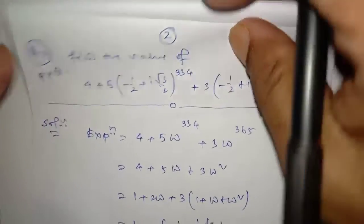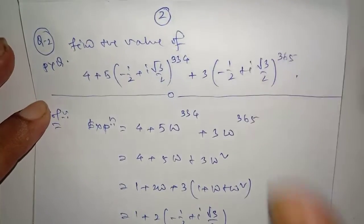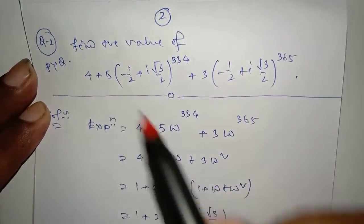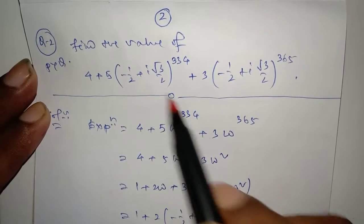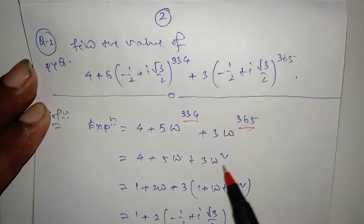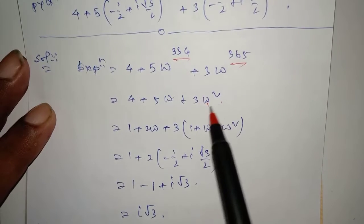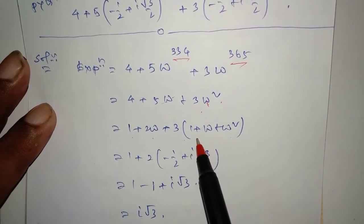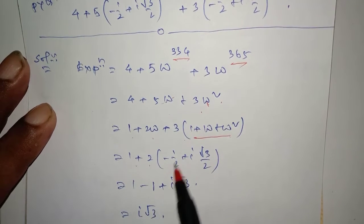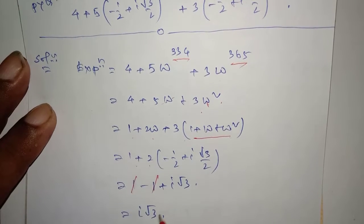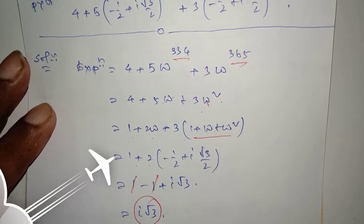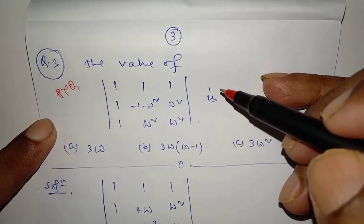Find the value of this — an important PYQ for JEE Mains as well as JEE Advanced. A is the value of omega. Divide by 3 and find the remainder: remainder is 1. Divide this also by 3 and find the remainder. Take 3 as common from A — the remaining part is 1 plus 2 omega, whose value is 0. So 1 plus 2 times omega: write it as 1 minus 1 plus iota root 3. The 1s cancel, so this equals iota root 3. This is very important for JEE Mains and JEE Advanced.